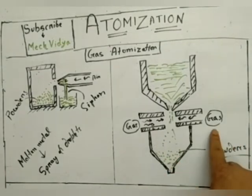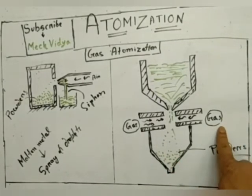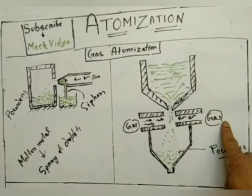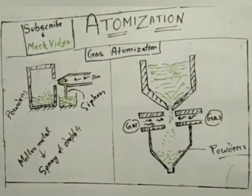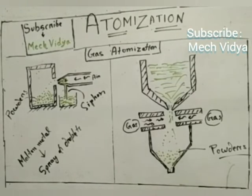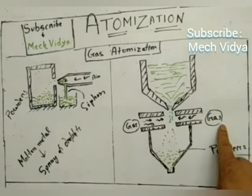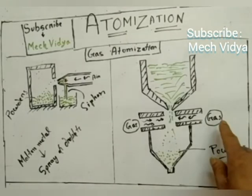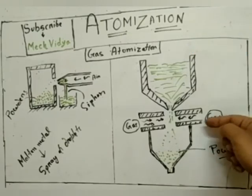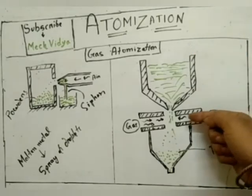Now we can use either air or gas, any other noble gas like helium or argon. Why do we need to use helium and argon? Because in some cases atmospheric oxygen reacts with the molten metal. So if we are working with those metals, then it will be wise to use helium or argon in place of air. This gas will be injected from these two ends.